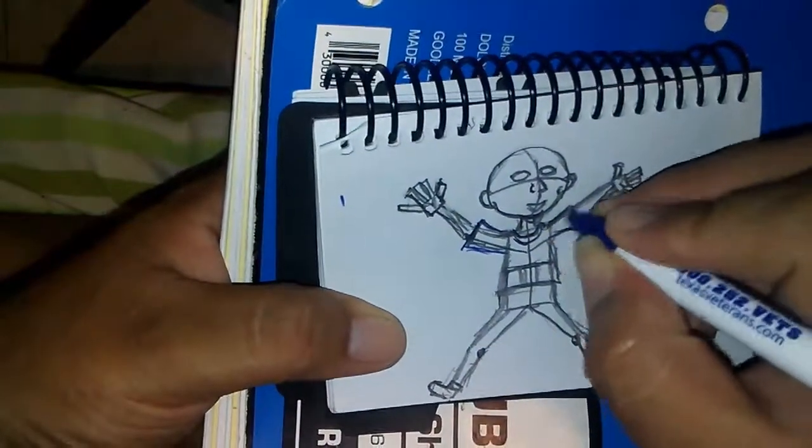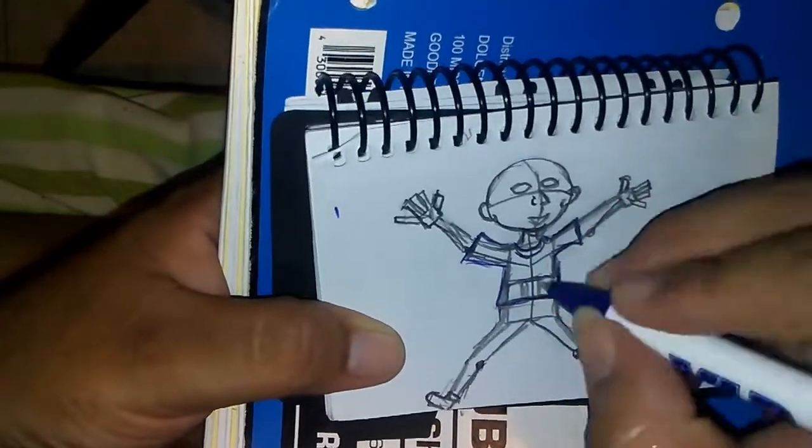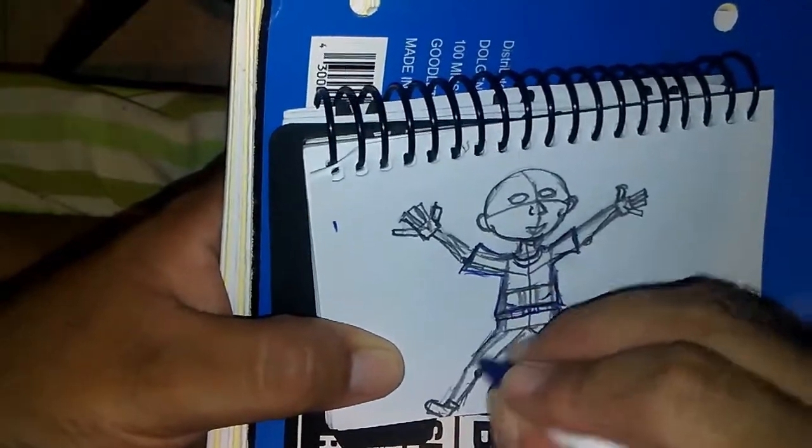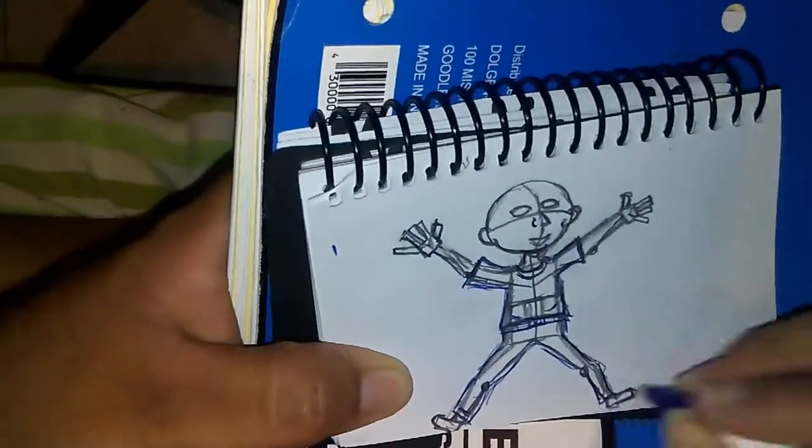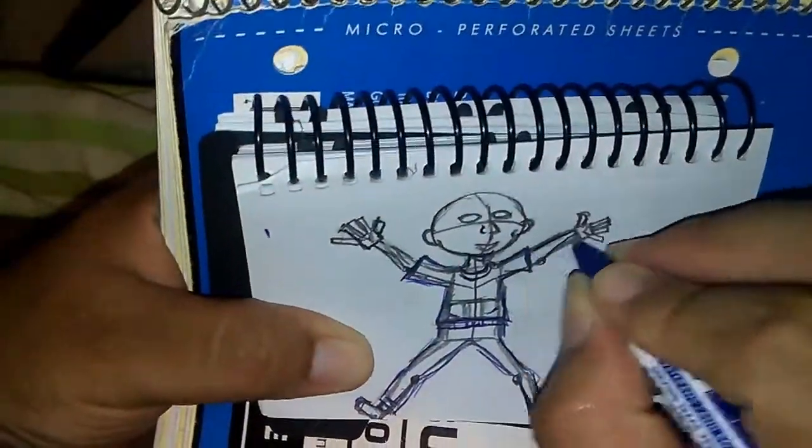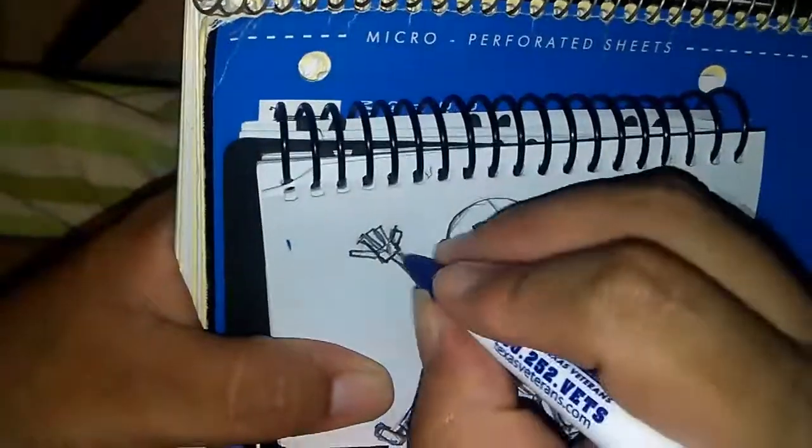Okay, now we're going to ink - go over it with the ink, with pen, whatever you have. Just use a regular ballpoint pen. I'm not using any fancy pencils, any fancy sketchbooks, any fancy pens. You can use all that, those are great.